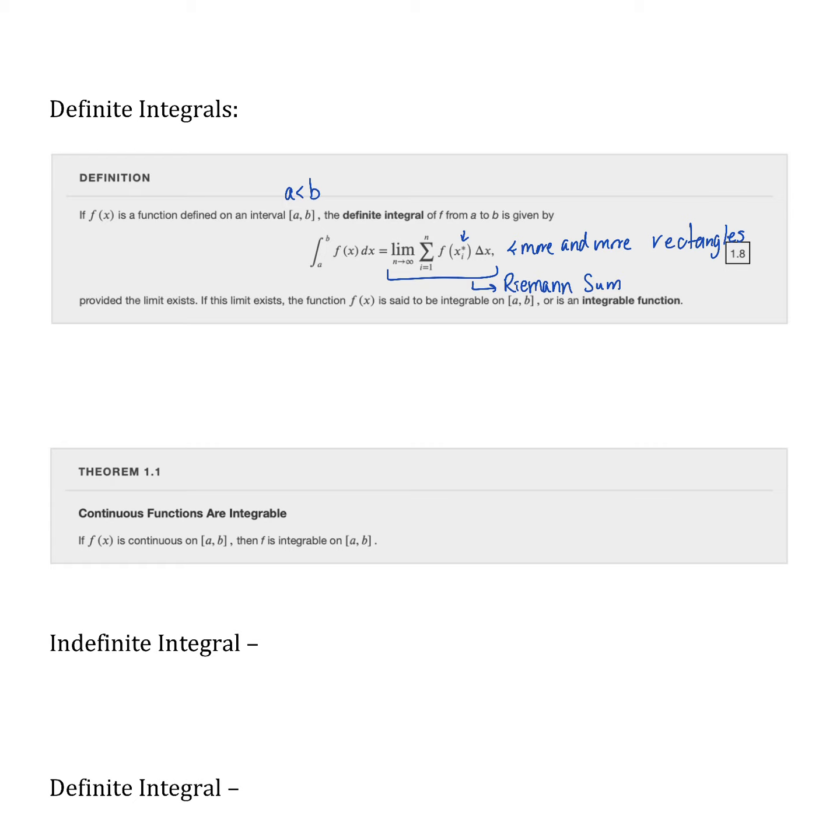Provided this limit exists, this is what's called the definite integral. If this limit exists, then f is called an integrable function. Integrable basically means that we can find the integral.